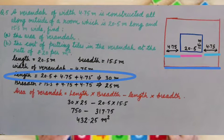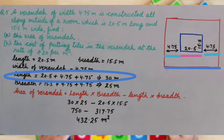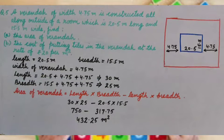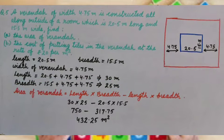So, the length of outer rectangle is 20.5 plus 4.75 plus 4.75, that is 30 meter, and breadth of the outer rectangle is 15.5 plus 4.75 plus 4.75, that is 25 meter.